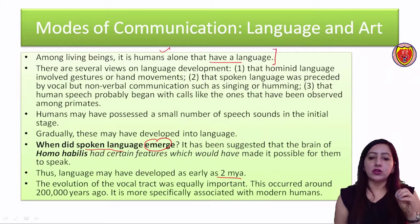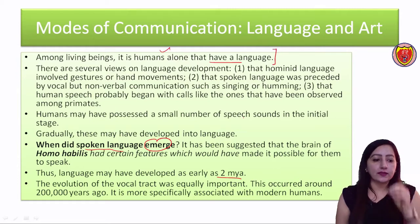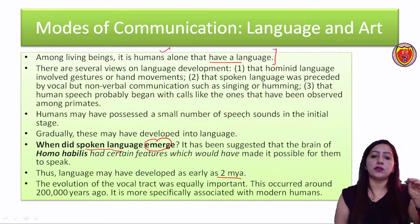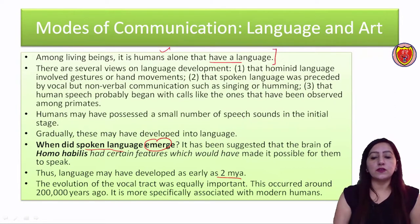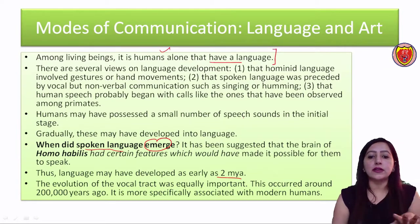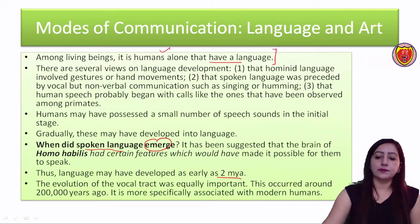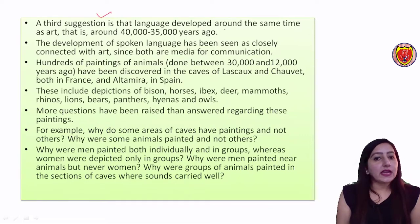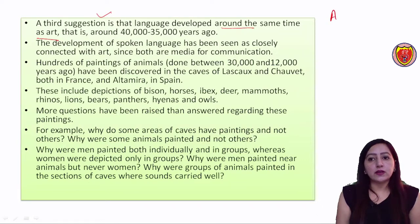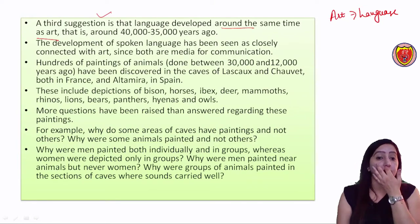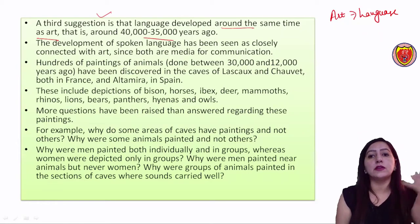The evolution of the vocal tract was equally important, as this occurred around 2 million years ago. The vocal tract developed 2 million years ago, and it is more specifically associated with modern humans. A third suggestion is that language developed around the same time as art - when art was developed, language was also developed - and that is around 40,000 to 35,000 years ago.